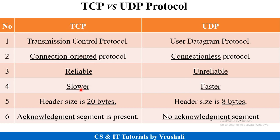TCP is slower compared to UDP because TCP follows flow control and error control mechanisms. UDP is a faster protocol because no such mechanism is present. TCP has a header size of 20 bytes, while UDP has a header size of 8 bytes.